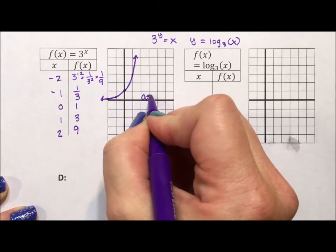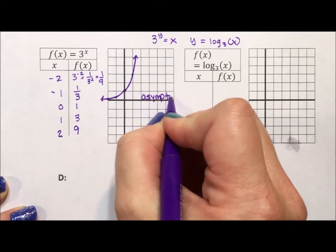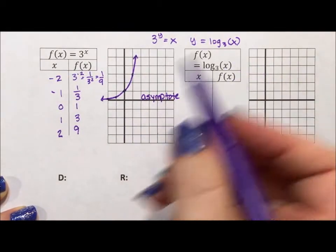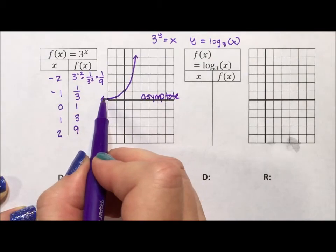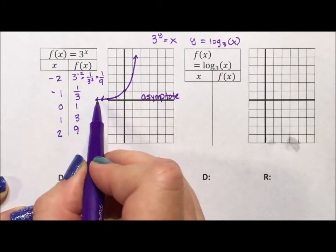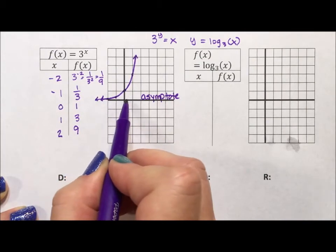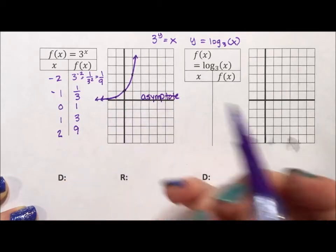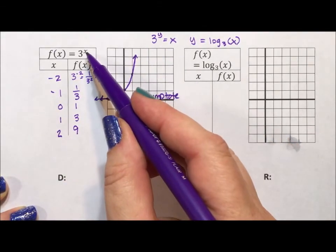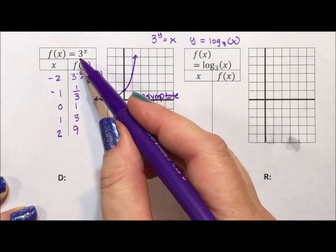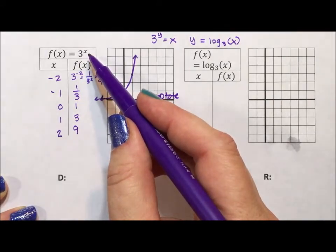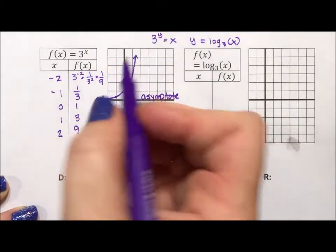Remember, this is your asymptote. An asymptote is a barrier you cannot cross. So though this goes forever left and right, it will never touch the x-axis or cross the x-axis. Exponents cannot make a number equal zero or make a number negative because you're multiplying a number to itself.